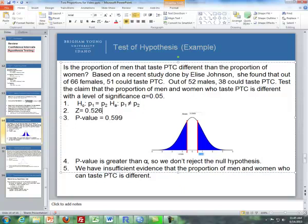And we have insufficient evidence to say that the proportion of men and women who can taste PTC is different. So we don't reject the null. And then we state the alternative hypothesis where we have insufficient evidence for it, because we didn't reject the null hypothesis.